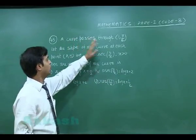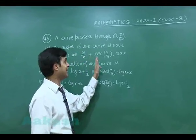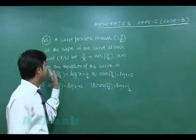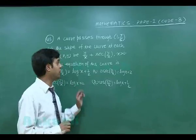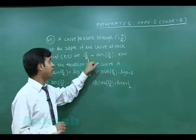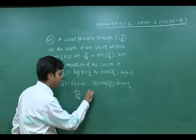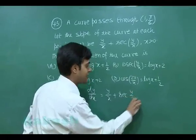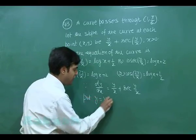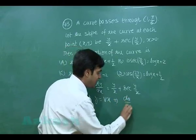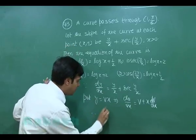Question 43: A curve passes through (1, π/6). The slope of the curve at each point (x, y) is y/x + sec(y/x), where x is a positive number. Find the equation of the curve. Four options are given. Since dy/dx = y/x + sec(y/x), this is a homogeneous differential equation. We substitute y = vx.